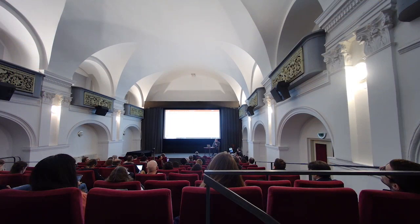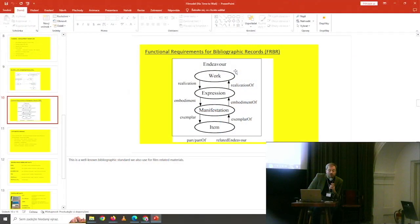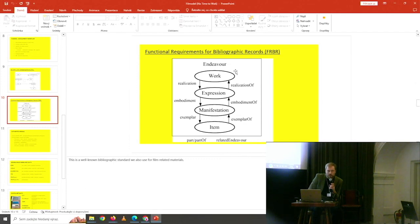Regarding interoperability with Europeana or other archives: we are not thinking about Europeana at this point. Maybe in the future, within the film archive community, if there is an interoperability standard. I think Paul and the Linked Open Data team — which I am also part of — are working on a core metadata ontology, a minimum set of metadata that can be interchangeable. But I think that minimum set is as far as we can get.